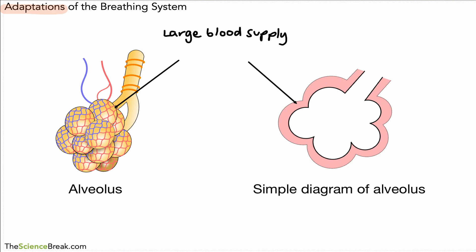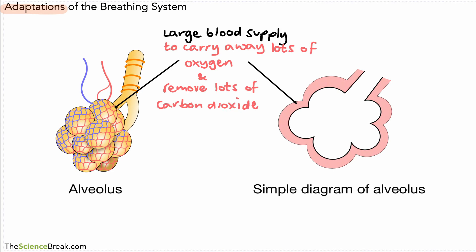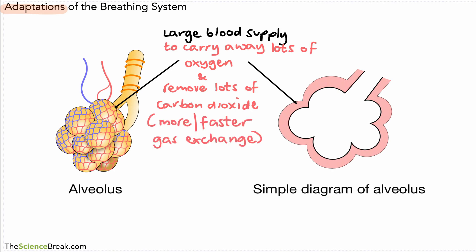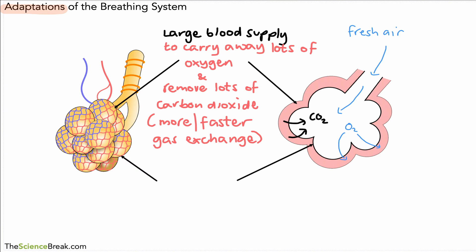One of the first adaptations is that we have a large blood supply. This is so that we can carry away lots of oxygen and remove lots of carbon dioxide — carry the oxygen to the body and remove carbon dioxide from the body. This means we have faster gas exchange. Fresh air comes into the lungs when we breathe in; the oxygen diffuses into the blood, and the carbon dioxide from the blood diffuses into the airspace so it can be breathed out.